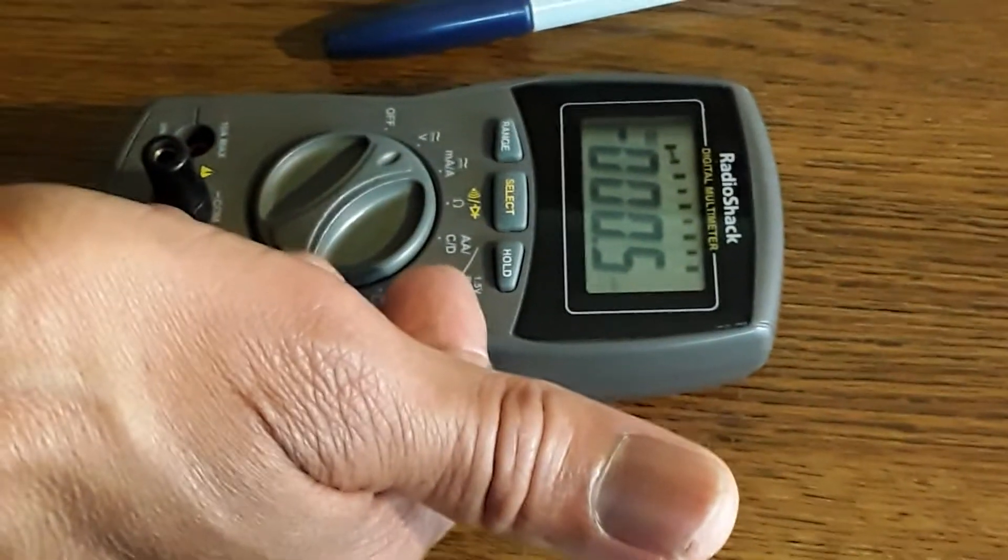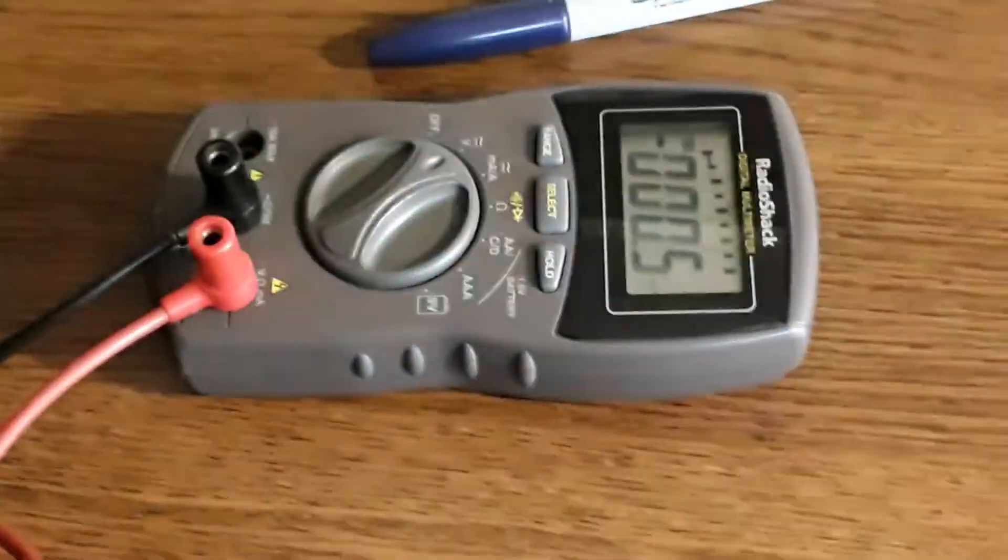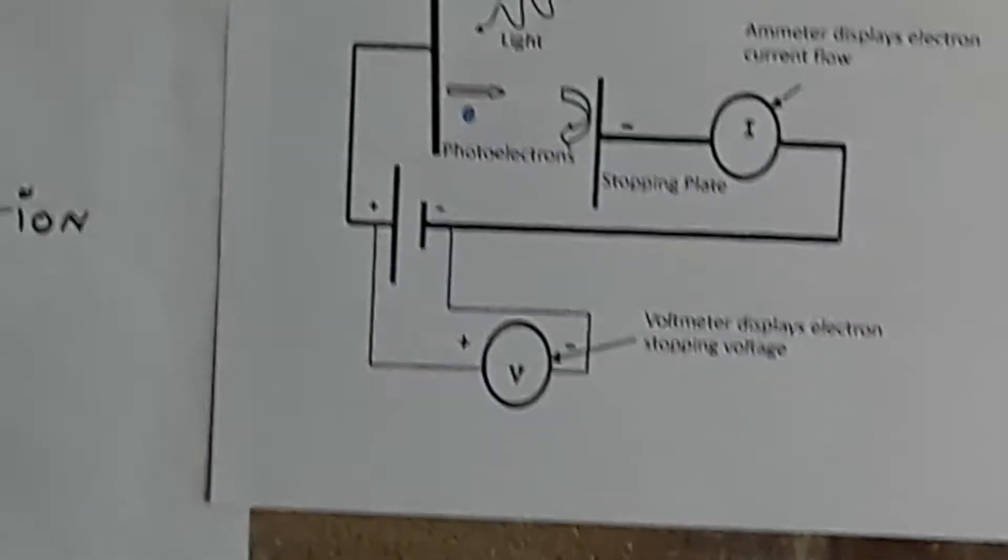So this guy will measure the voltage, the stopping voltage we're going to call it, which is shown here as V. And the current will be measured from this part right here.